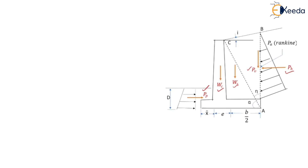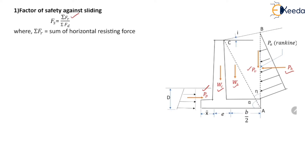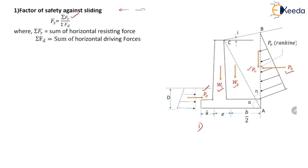Now we will discuss different factors of safety. First, we will see factor of safety against sliding. The factor of safety against sliding is given by: Fs = ΣFr / ΣFd, where Fr is the sum of horizontal resisting forces and Fd is the sum of horizontal driving forces. Since sliding takes place in the horizontal direction, we will consider horizontal forces only. Since sliding of the retaining wall is considered, two more forces will also come into picture.